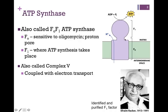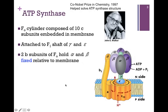The F1 domain is the portion that looks like a lollipop, and that's where we actually make ATP. It's sometimes called Complex 5 because it's so tightly coupled to electron transport, and our last component in that chain is Complex 4. It was Ephraim Racker who first purified and identified the function of the F1 domain, and John Walker shared the Nobel Prize in Chemistry in 1997 through his work helping to solve the ATP synthase structure.